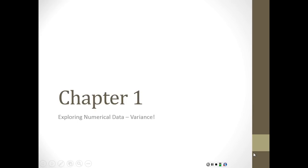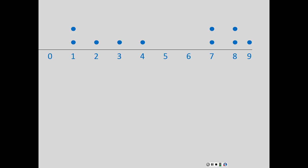When analyzing a single quantitative variable, there are two things we focus on: number one is the center, and number two is the spread or variability. Let's look at this dot plot of some values — maybe it's like number of friends you have. If you add up those numbers and divide by the count, you'll find the mean is five. The mean isn't an observation — it's a piece of information you extracted.